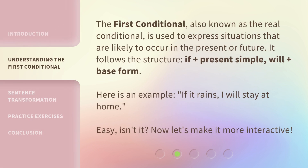The first conditional, also known as the real conditional, is used to express situations that are likely to occur in the present or future. It follows the structure: if plus present simple, will plus base form. Here is an example: if it rains, I will stay at home. Easy, isn't it? Now, let's make it more interactive.